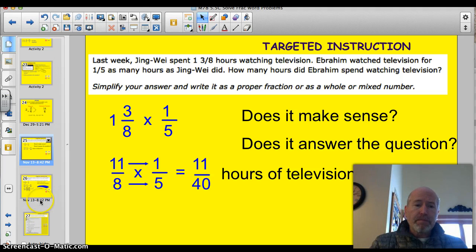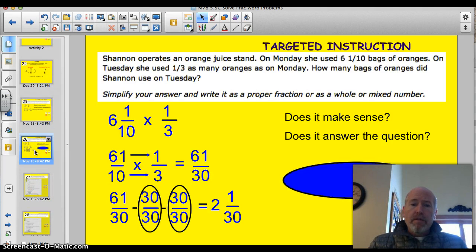Take a look at another example here. Shannon operates an orange juice stand. On Monday, she used 6 and 1 tenths bags of oranges. On Tuesday, she used 1 third as many oranges as on Monday. How many bags of oranges did Shannon use on Tuesday? Again, we have to simplify our answer as a proper fraction, or as a whole number, or a mixed number. So, bottom line, it's right here. It's 6 and 1 tenths times 1 third. Well, 1 third is okay. This dude here, this mixed number, got to change him into improper fraction. So, 6 times 10 is 60, plus 1 is 61 tenths. So, I'm going to rewrite that. 61 tenths times 1 third.